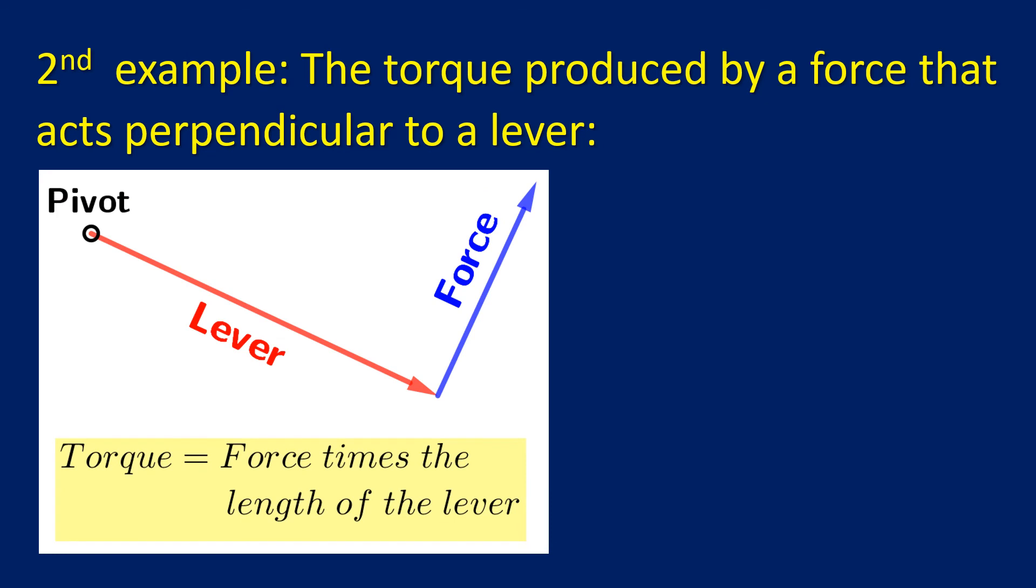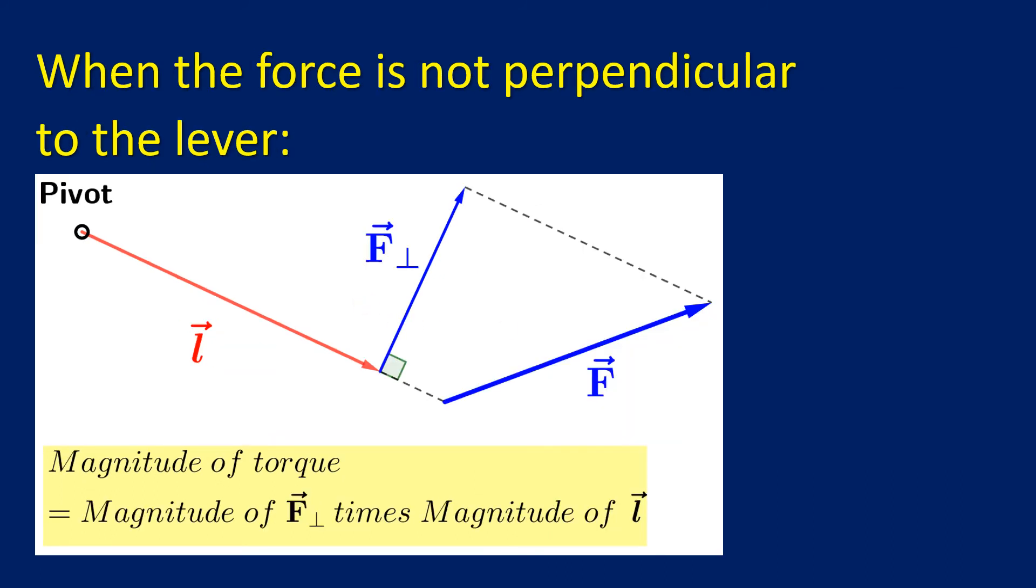The torque produced by a force that acts perpendicular to a lever. As children, the students learn that the torque you find by multiplying the magnitude of the force by the length of the lever. When students learn about vectors they can do things a little more complicated and interesting, like finding the torque produced by a force that is not perpendicular to the lever.